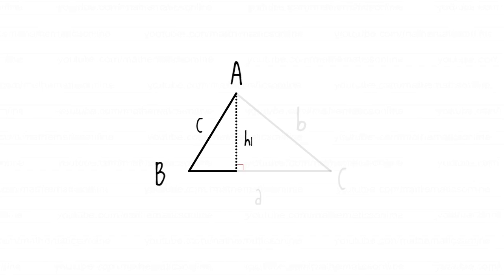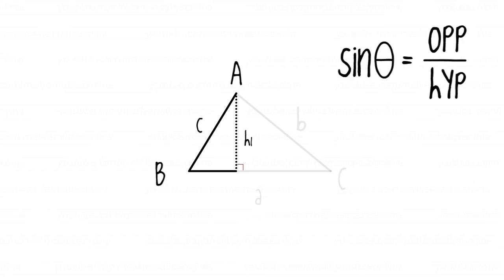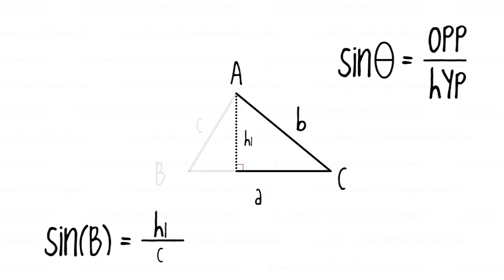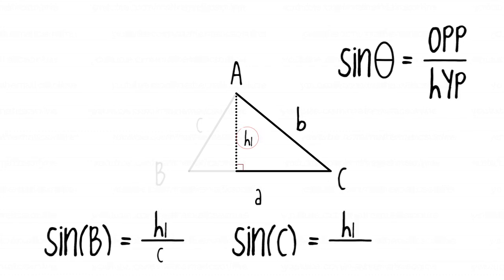We have two right triangles and we are going to use sine of theta is equal to the opposite side over the hypotenuse. Looking at the right triangle, sine of angle B is equal to the opposite side h1 over the hypotenuse which is side c. Looking at the other right triangle, sine of angle C is equal to the opposite side h1 over the hypotenuse of side b.